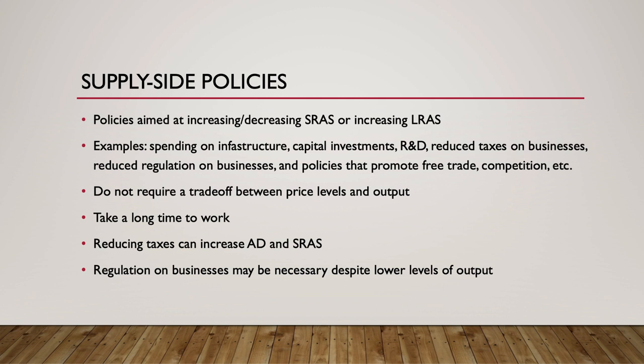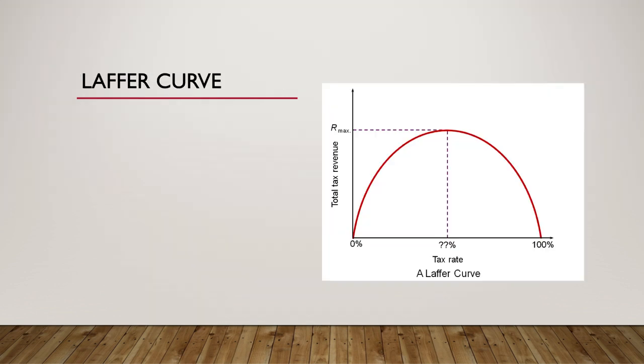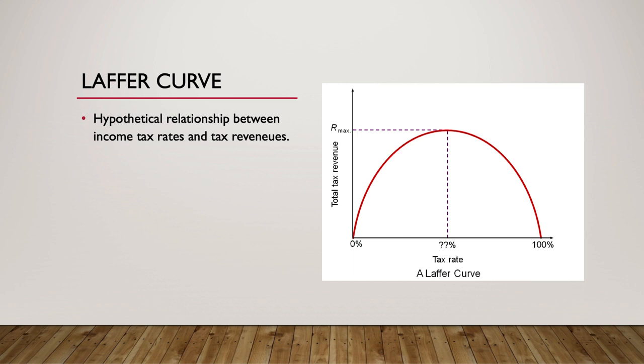While reducing regulation on industries like pharmaceuticals or repealing environmental regulations on businesses would result in greater output, some economists argue that certain regulations are necessary. For example, extensive deregulation of the banking industry contributed to the financial crisis and recession in 2007. In addition, some economists argue that reducing taxes could even increase tax revenue for the state.